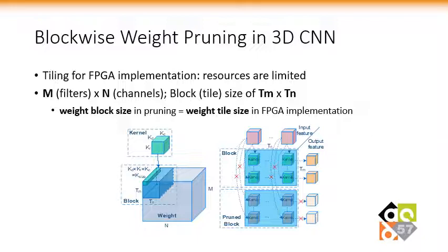Suppose a weight matrix consists of N filters and N channels, and we let each weight block contain tm filters and tn channels, namely tm × tn kernels. Each weight block is completely pruned or preserved, so we call our pruning scheme block-wise weight pruning.